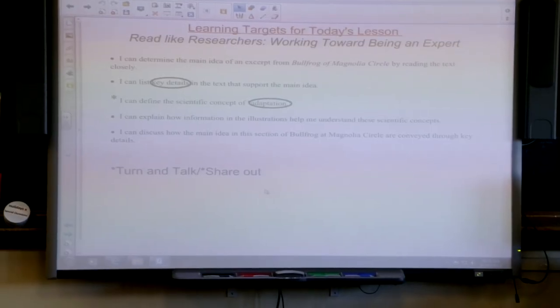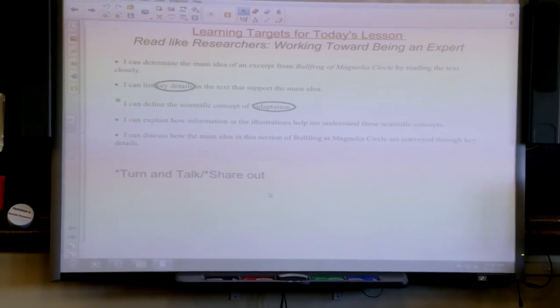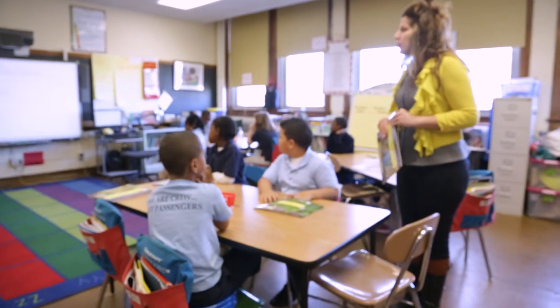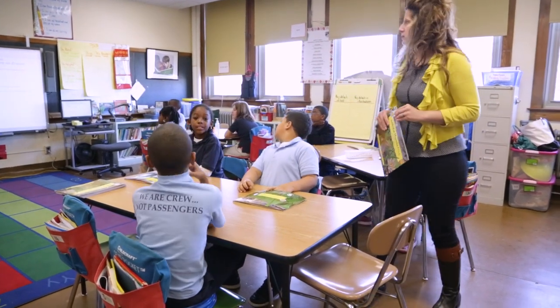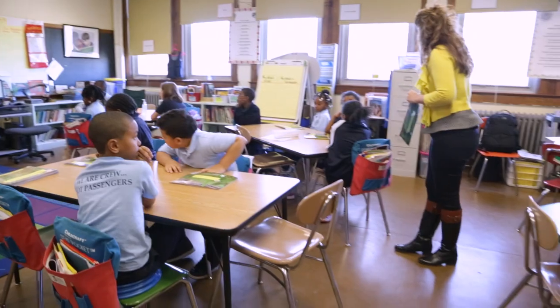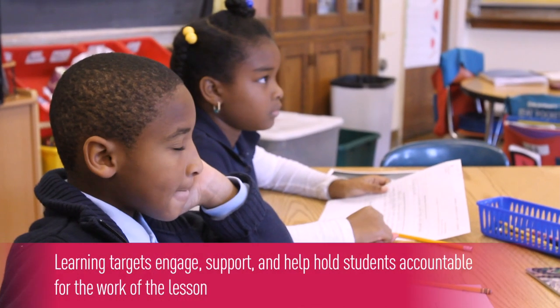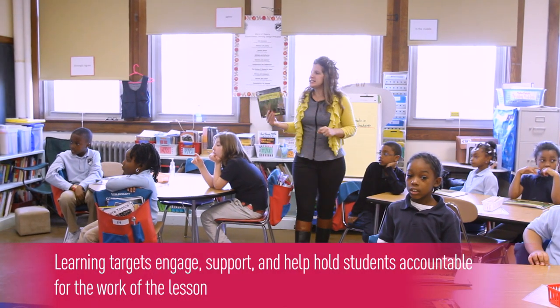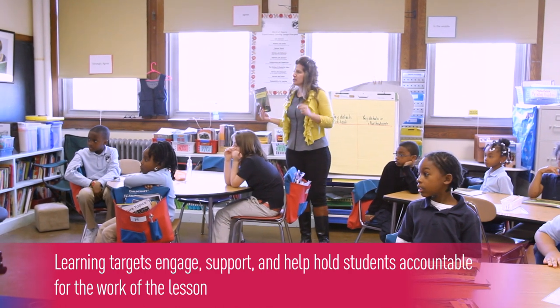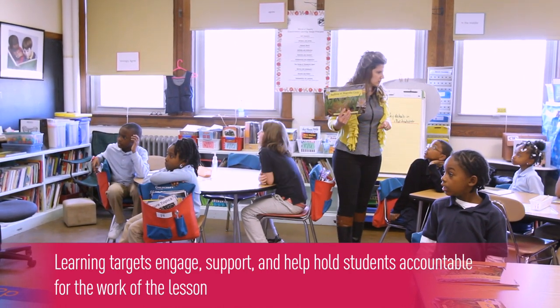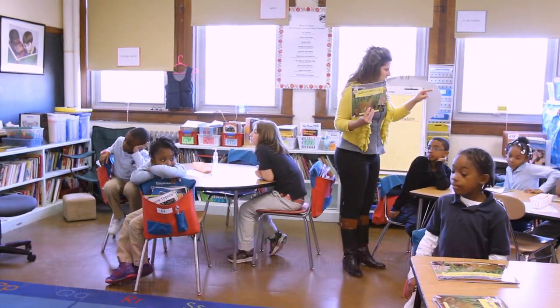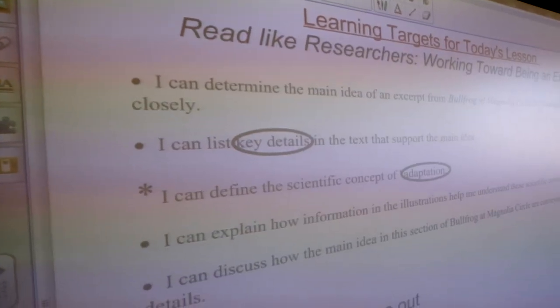The next part of the lesson includes unpacking the learning target. Today's target: you're going to read like you're a researcher — kind of like a scientist — because you're going to work towards being an expert on frogs. "I can list key details in the text that support the main idea." In the second target, I made sure to clarify with the students that we had an agreed-upon understanding of the term "key details," which would be crucial to moving forward in the lesson.